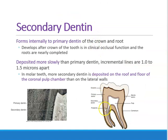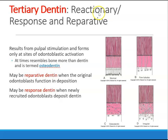Secondary dentin covers the pulp on the outside and inside. It gets formed once the tooth is fully erupted and is deposited more slowly than primary dentin. In a molar tooth, more of the secondary dentin is typically formed on the roof and on the floor of the pulp chamber.